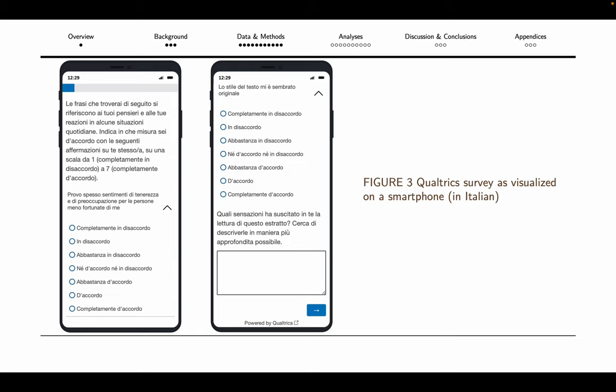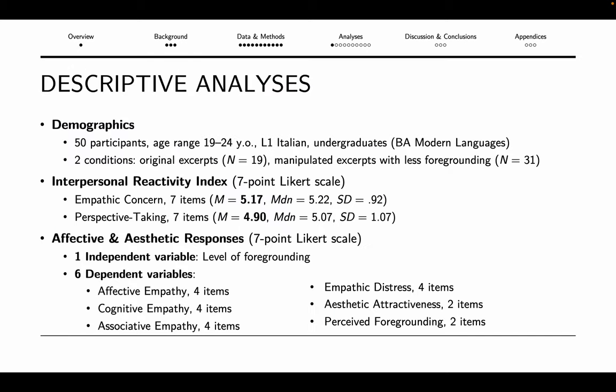This is an example of how questions were displayed in the survey. As for the survey results, I had 50 respondents ranging from 19 to 24 years old, all Italian native speakers and undergraduates in modern languages. 19 of them read the original texts and 31 read the manipulated ones. On average, the Interpersonal Reactivity Index scores pre-announced an empathic population of readers, especially for the empathic concern dimension.